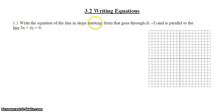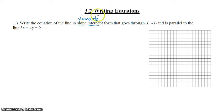In order to write the equation of a line in slope-intercept form, we need to find two pieces of information. We first need to find the slope of the line, and then we need to find the y-intercept for that line.